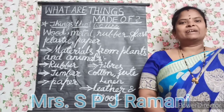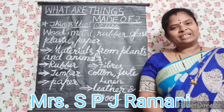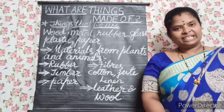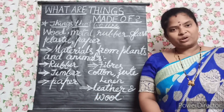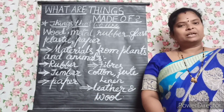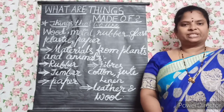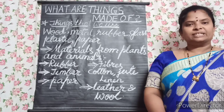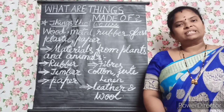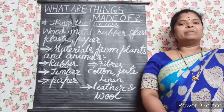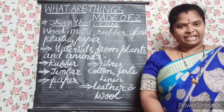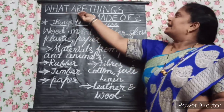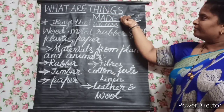Hello children. We use several things in our daily life. Some are hard and shiny, some are hard and strong, some are smooth and some can be stretched. Are they the same? No, they are different. Why are they different? Because they are made from different materials. So today our lesson is: what are things made of?